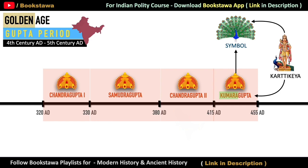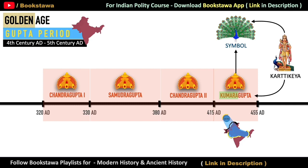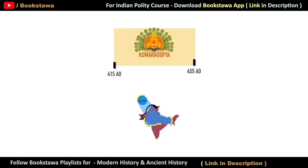Now let's talk about his territorial extent — how far the Gupta Empire was spread during his time. In the previous video we saw the territorial extent of Chandragupta II. So when Kumar Gupta became the ruler in 415 AD, the territorial extent of the Gupta Empire was exactly the same as it was at the time of Chandragupta II.